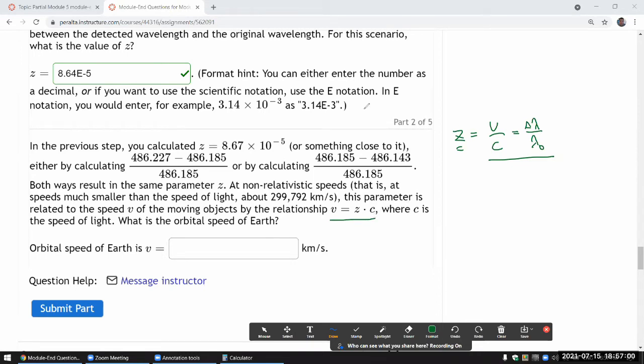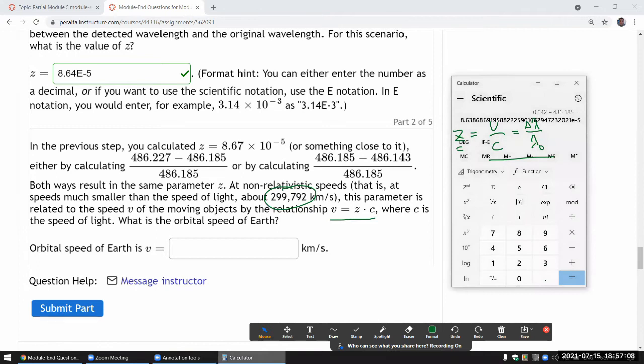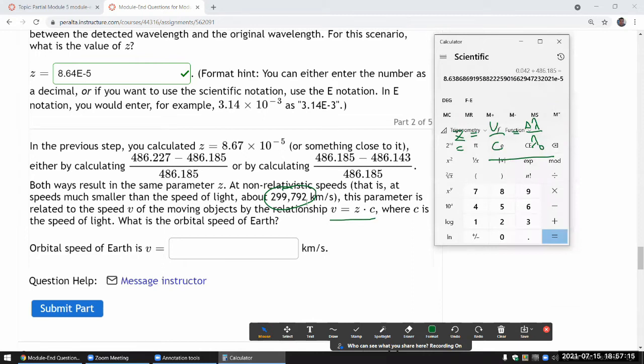So yeah, we were given C here. So we just multiply that to our calculated z to get the speed. So I already have the z that is still in the calculator. Let's multiply it by speed of light. And I'm checking the units to be sure. So the final unit we want is kilometers per second. And the question was nice enough to give it in kilometers per second already. So multiply by 299,792 kilometers per second.